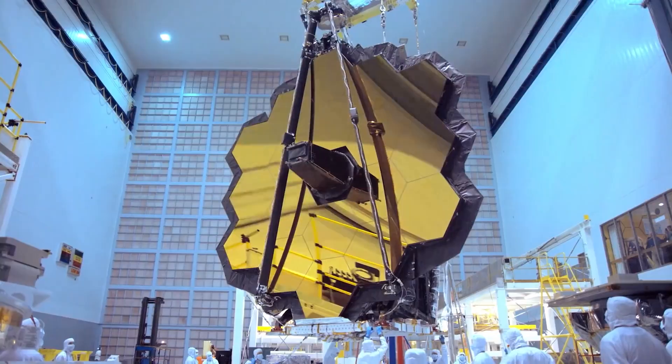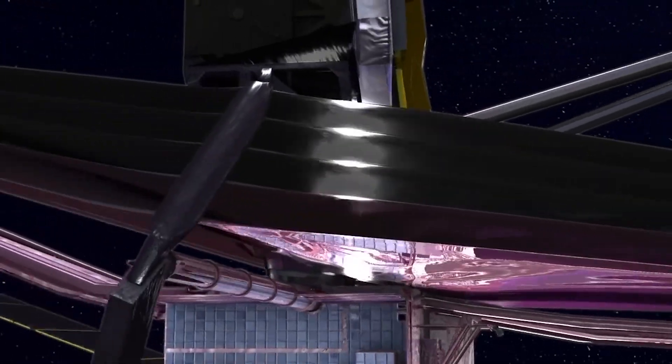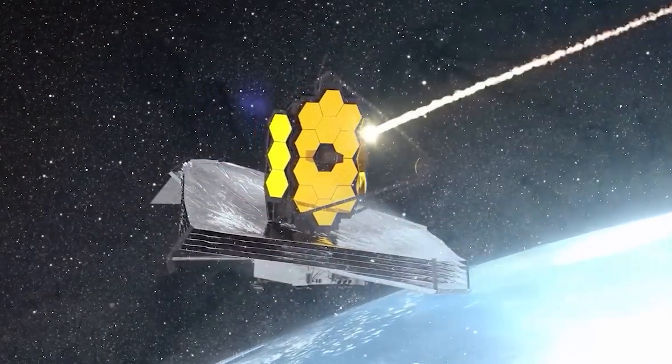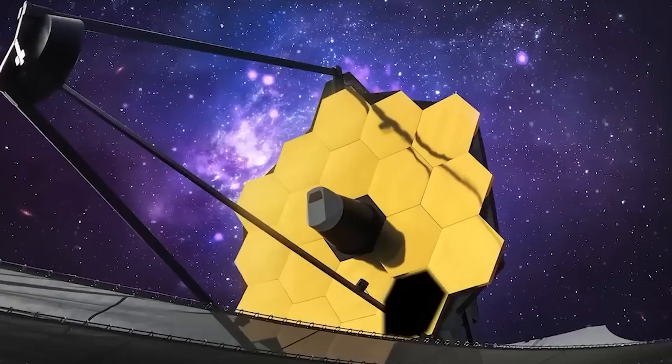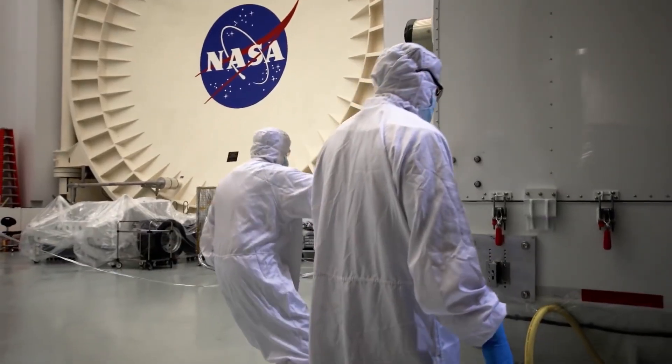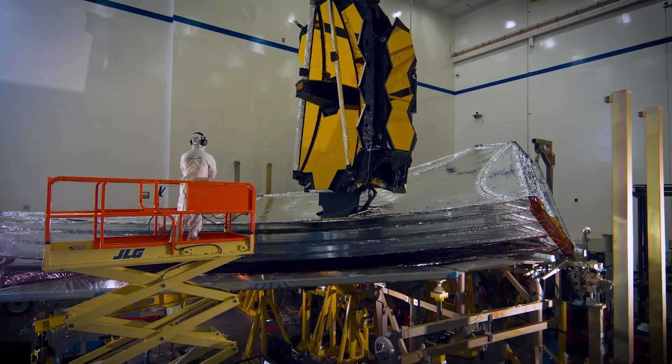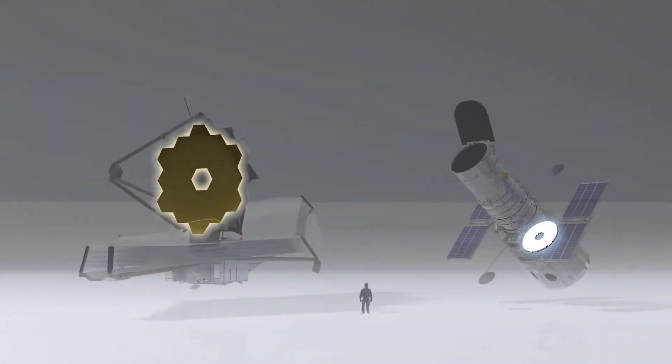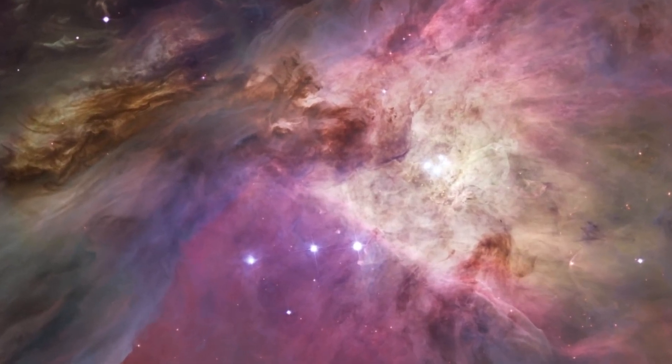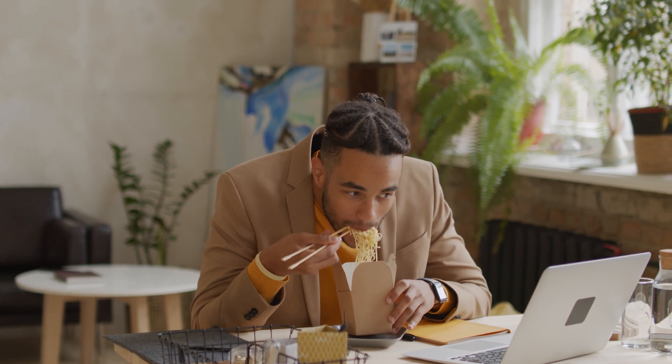The James Webb Space Telescope made headlines once again because this next-generation space observatory has sustained its first noticeable micrometeoroid impact in just less than six months after launch, but NASA is not so worried about it, and for good reason. But what exactly makes this James Webb Space Telescope so special? How is it different from the Hubble Space Telescope? What surprises do we have at the edge of the universe? Stick around till the end of the video to find the answers.